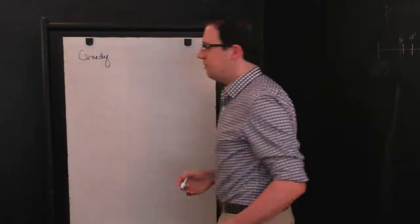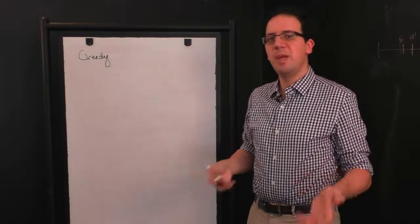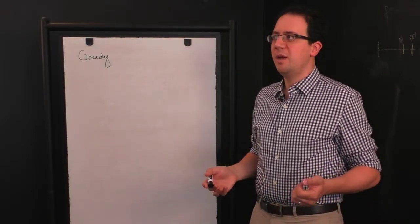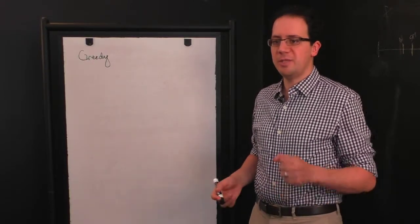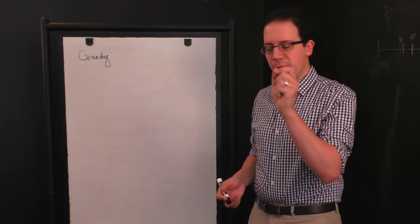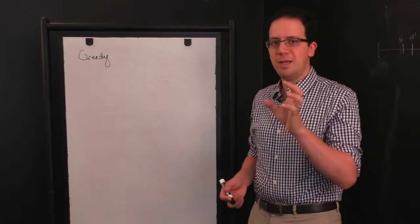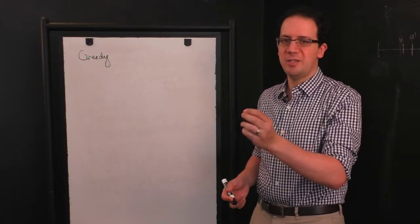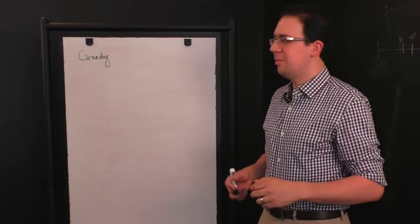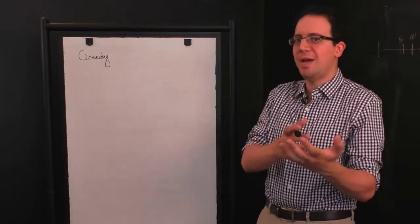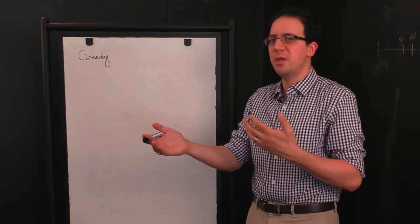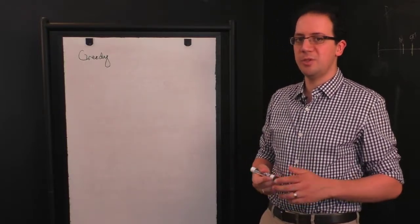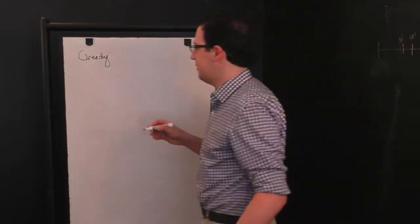The idea of greedy algorithms is you're trying to make some sort of selection out of your input to optimize some function. Greedy basically means you go through your input and you take the first thing that looks the best. Usually there are constraints where taking that prevents you from taking something else, so greedy algorithms don't always work, but there are a lot of cases where greedy algorithms do work, and we'll see an example of that now.